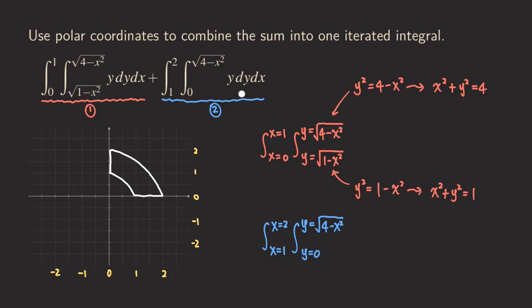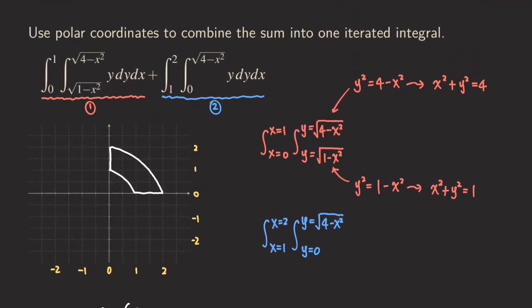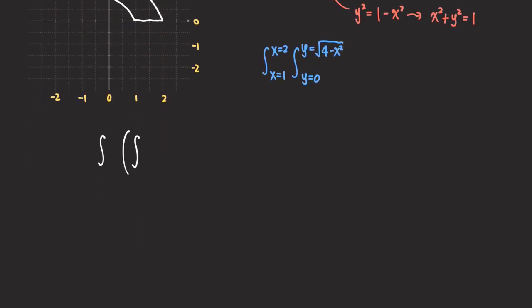Now, how do we write that as one iterated integral? We start making the conversion by writing down the inner integral. We convert the integrand first because it is usually the easiest. The Y gets converted into polar as R sine of theta. When we convert to polar, the DA gives us R dr dθ, so we place the R here, then dr, and dθ is on the outside.